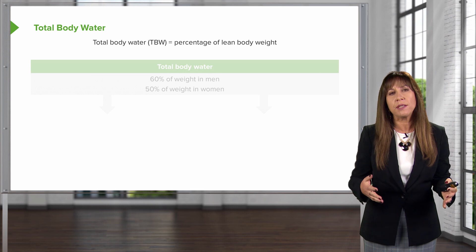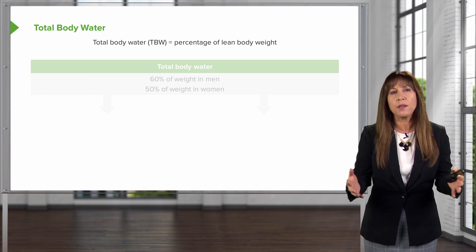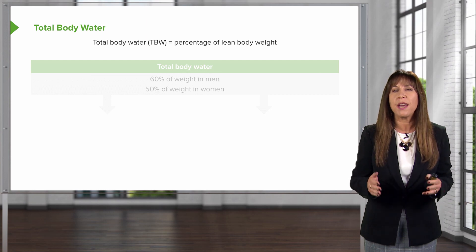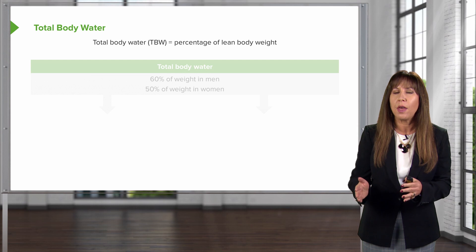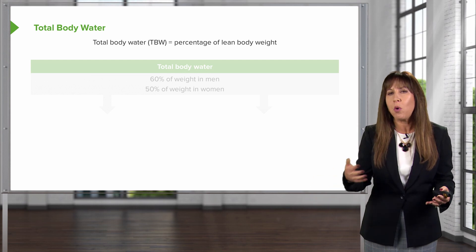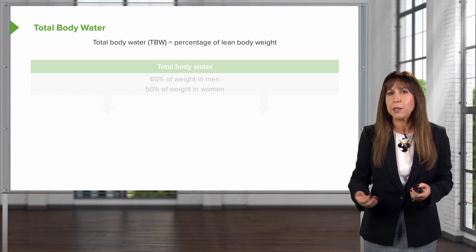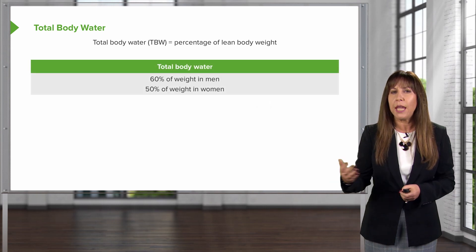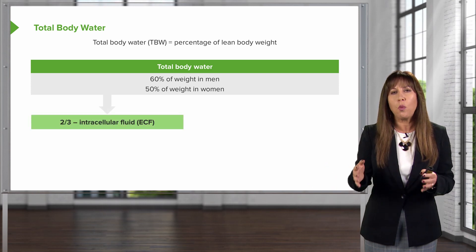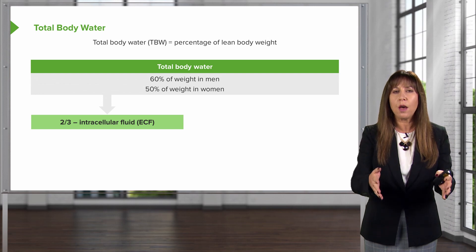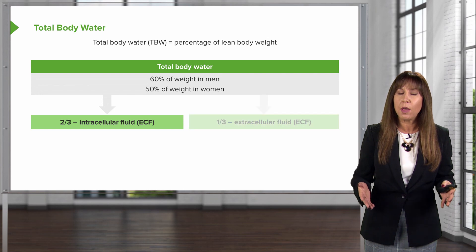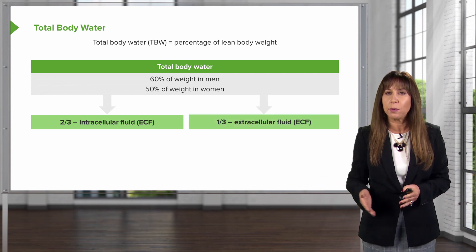In order to understand this concept, it's really important to discuss how total body water is distributed. Total body water is the percentage of lean body weight. In men, because they have more muscle mass, 60% of their weight is total body water. In women, about 50% of their weight is total body water. About two-thirds of total body water will be contained in the intracellular fluid compartment, and only one-third resides in the extracellular fluid compartment.